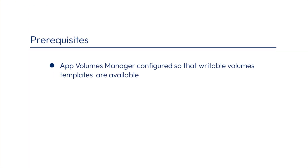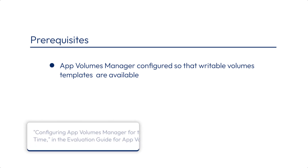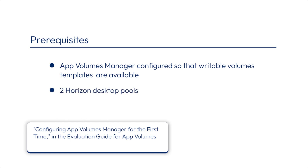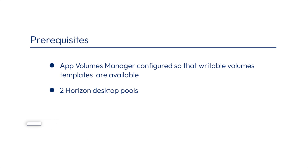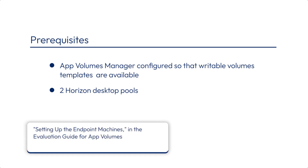To do this exercise, you need to have App Volumes 4 installed and configured so that writable volume templates are available, as described in the section called Configuring App Volumes Manager for the first time. You'll also need a couple of Horizon desktop pools that a particular end-user is entitled to, and you'll need Horizon Client installed.